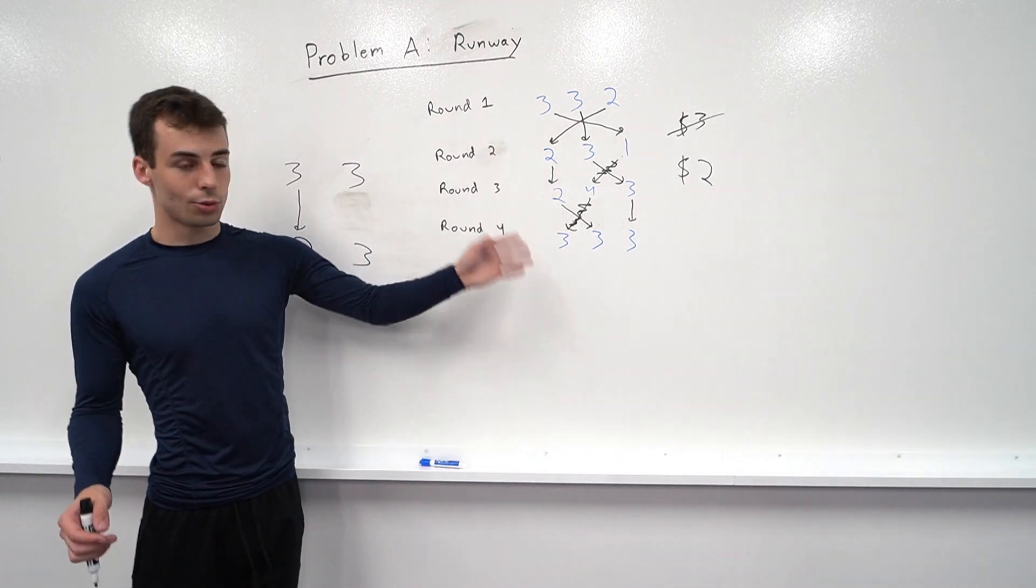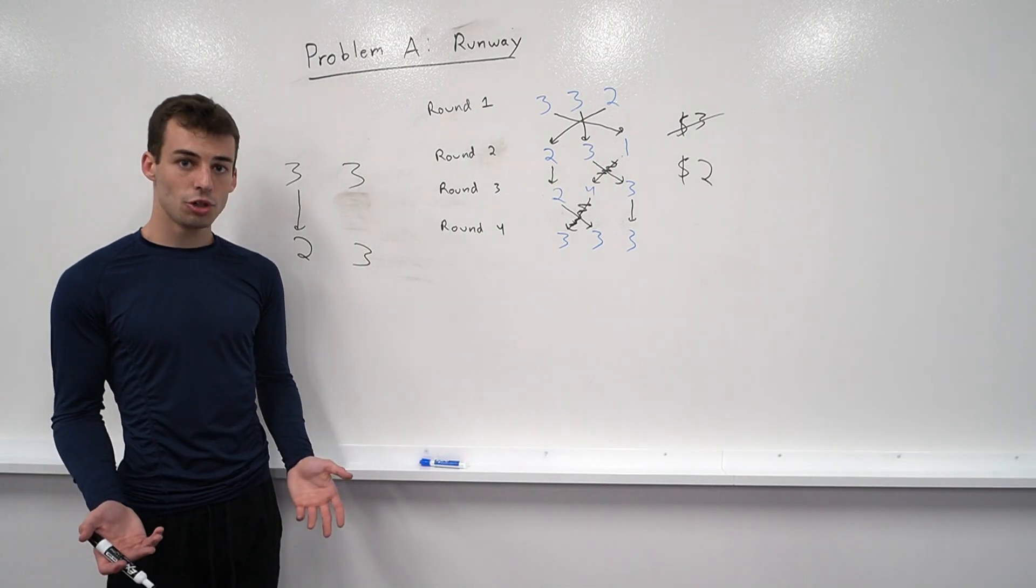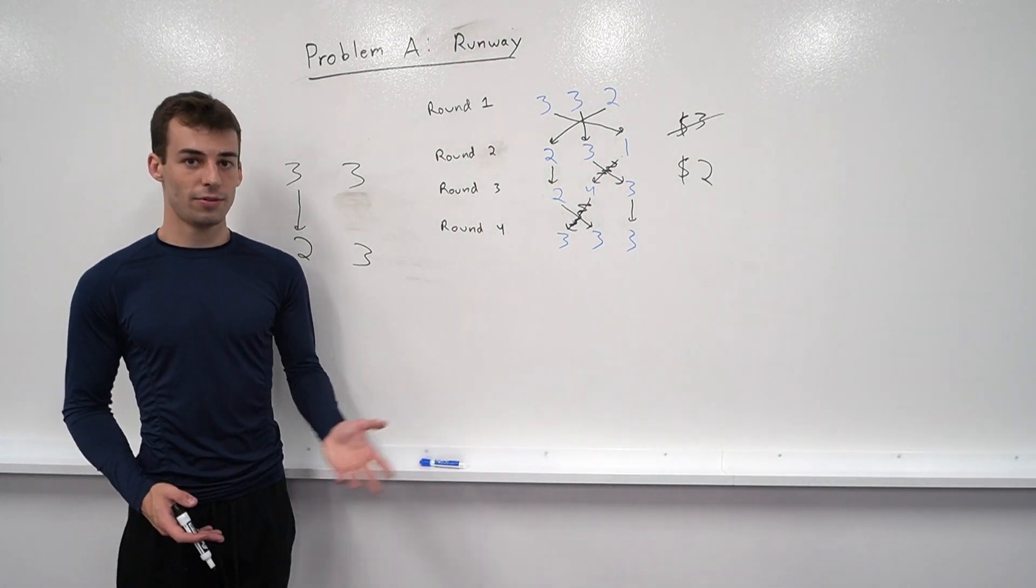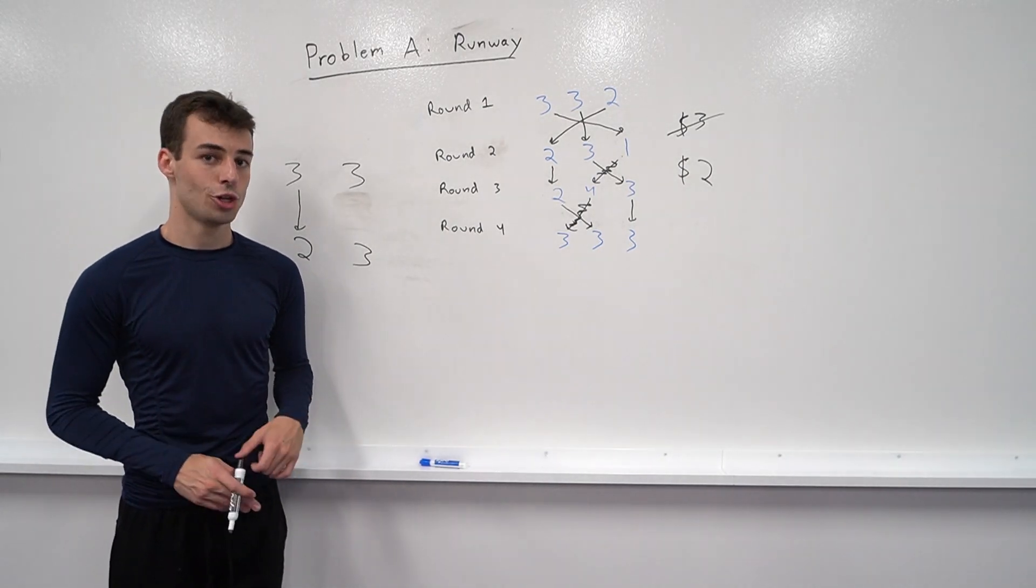So we can simply build this graph and then simulate it and count for each model how many times does this model change, and then we'll pay the cost of either zero if it changes one or fewer times or the cost of n minus one if it changes n times.